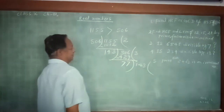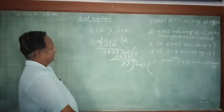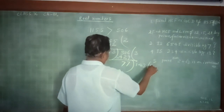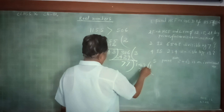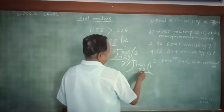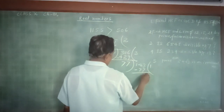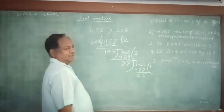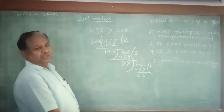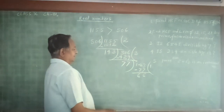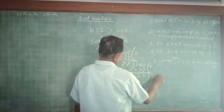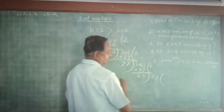Divide 143 by 77. One time 77. Subtracting gives remainder 66. Again, remainder is not equal to 0, so take this remainder as a new divisor. Again, divide 77 by 66.